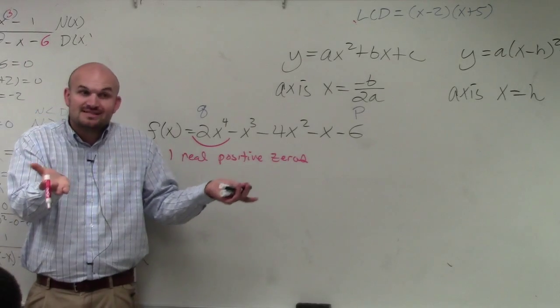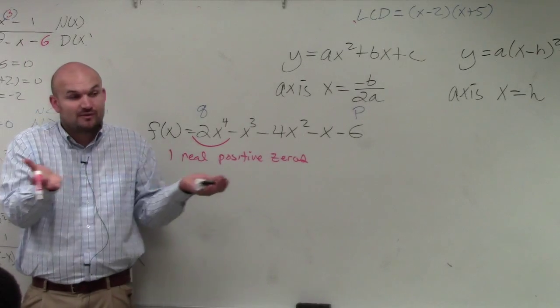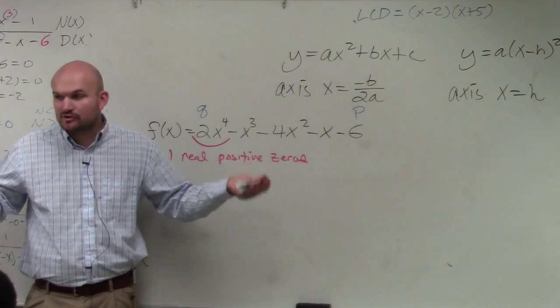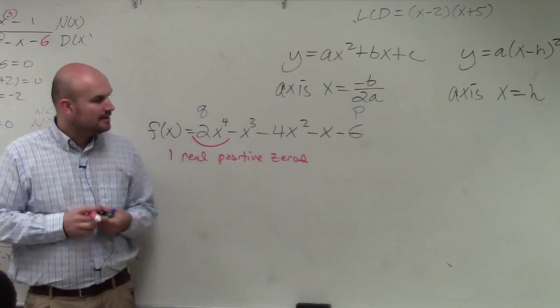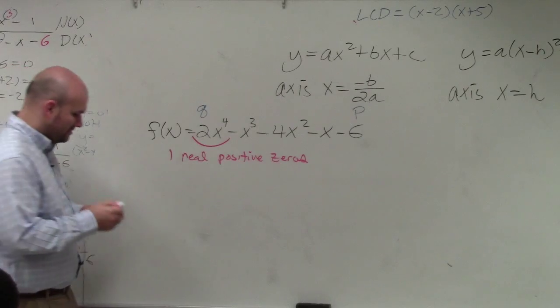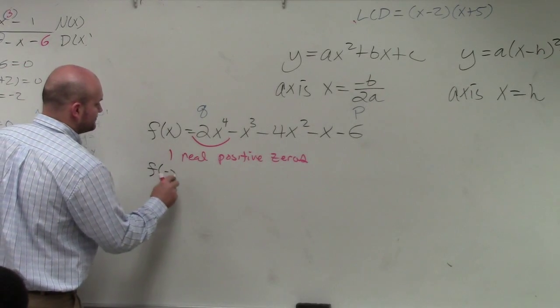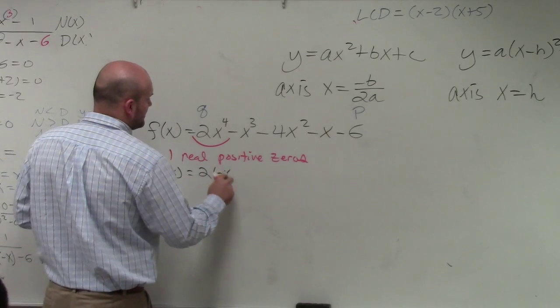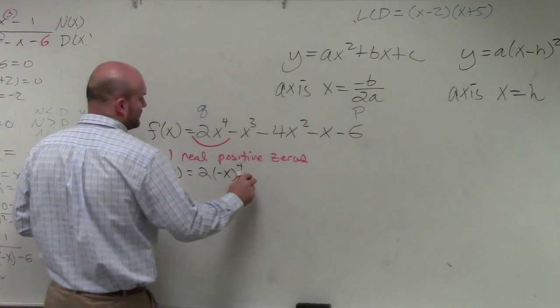So once you find one positive real zero, that's it. You know there's no more positive real zeros, right? Then what he said was, what about if I do f of negative x? What that's going to do is that's going to tell me the number of negative real zeros.